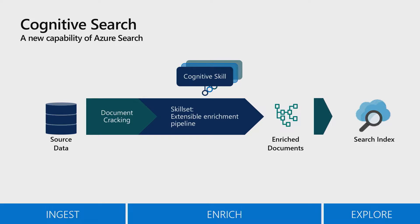extract information from different data sources. Sometimes you have unstructured data, like files, like PDFs, and so forth. Or you may have a structured database, like an Azure SQL database. And what we want to do is ingest that information. In the cases where you have unstructured information, we want to be able to crack those documents open, extract images from them, extract text, and then run machine learning algorithms that we call cognitive skills — this enrichment pipeline in the middle.